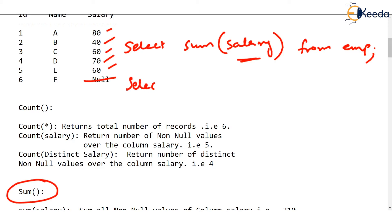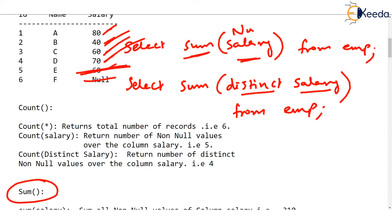But what if you give select sum distinct salary from emp? Now, it will count 80 plus 40 plus 60 plus 70. But this 60 won't be added again because we have given distinct salary. Sum always works on numeric value. Numeric column, you can use sum.